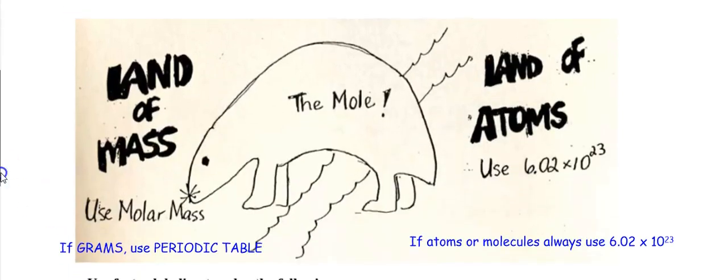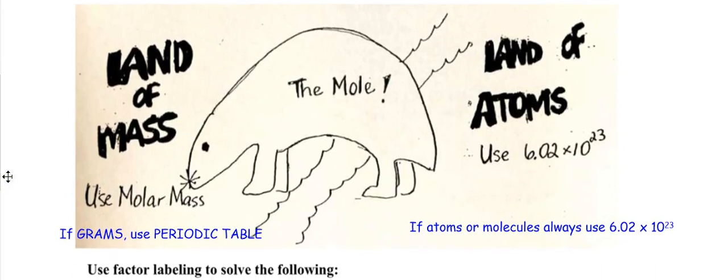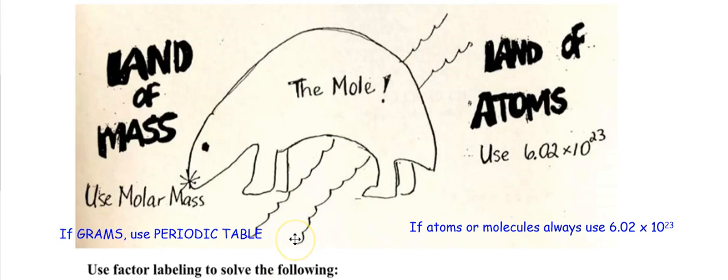Here's a picture. So here's the land of mass, and here's the land of atoms or molecules. And there's this divide — maybe it's like the Ohio River. Are you just going to walk across to Kentucky? Of course not. Hopefully you don't swim — the Ohio River looks pretty nasty. So you're not going to swim across either. You're going to take a bridge. That's what the mole is — the mole is the bridge between the atoms or molecules and mass.